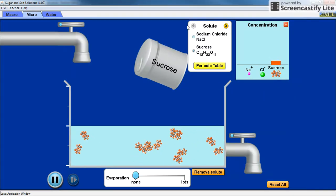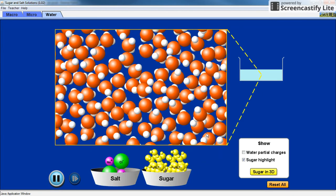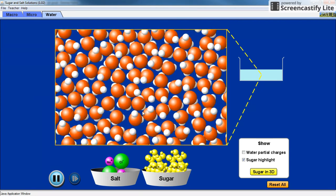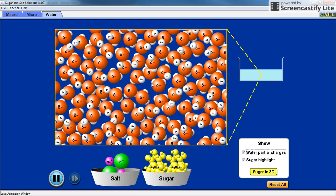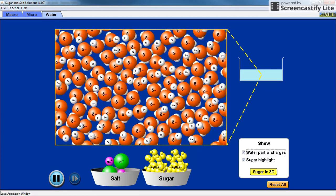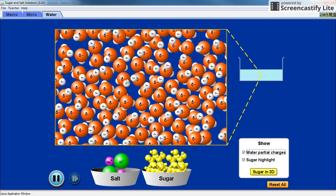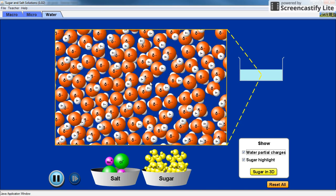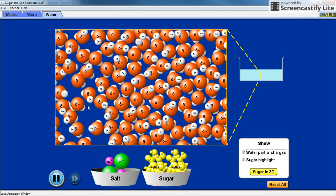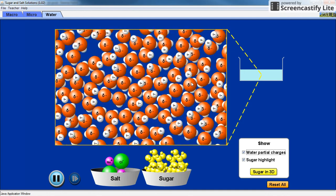We can explore this further in the water tab. Notice if I put the water partial charges here, you can see that the oxygen, which is the negative end, is attracted to the more positive hydrogen ends of another water molecule. And if you look carefully you can see that happening all over the place.